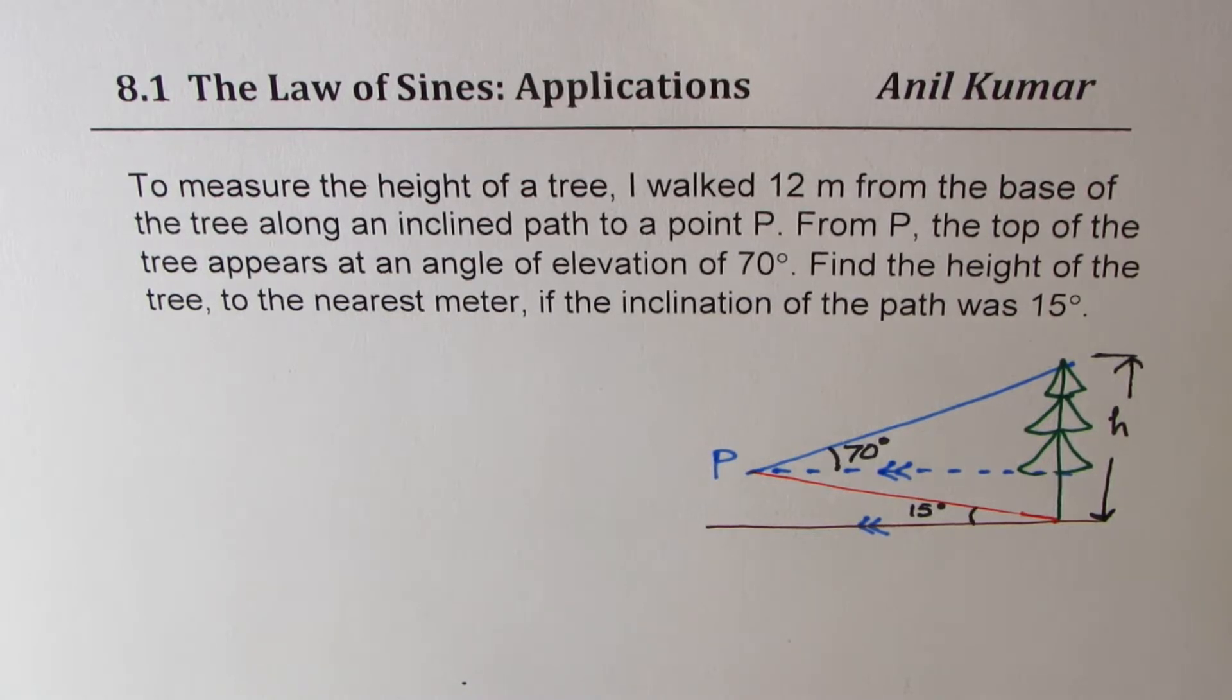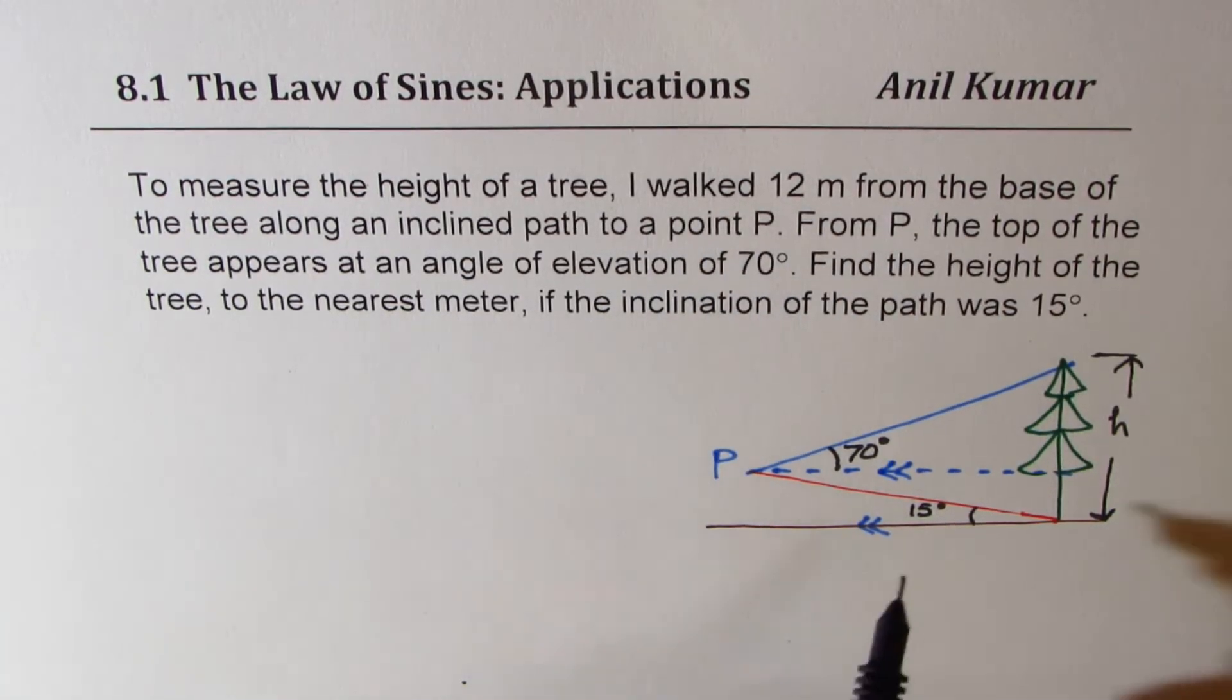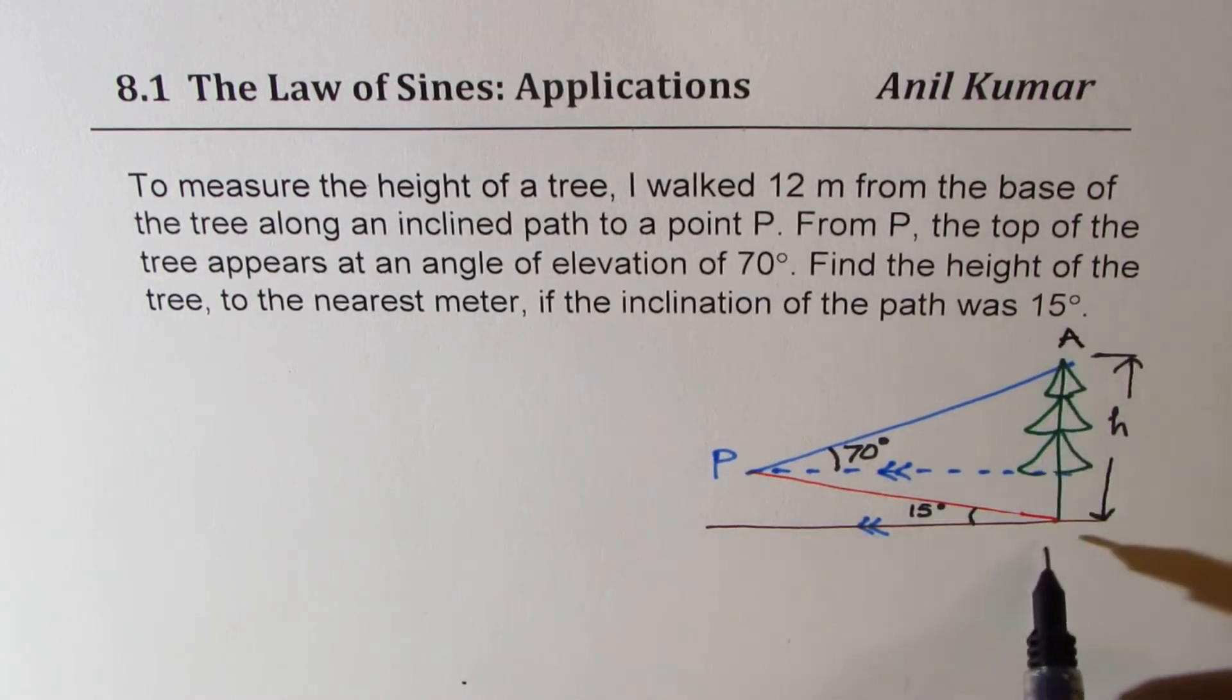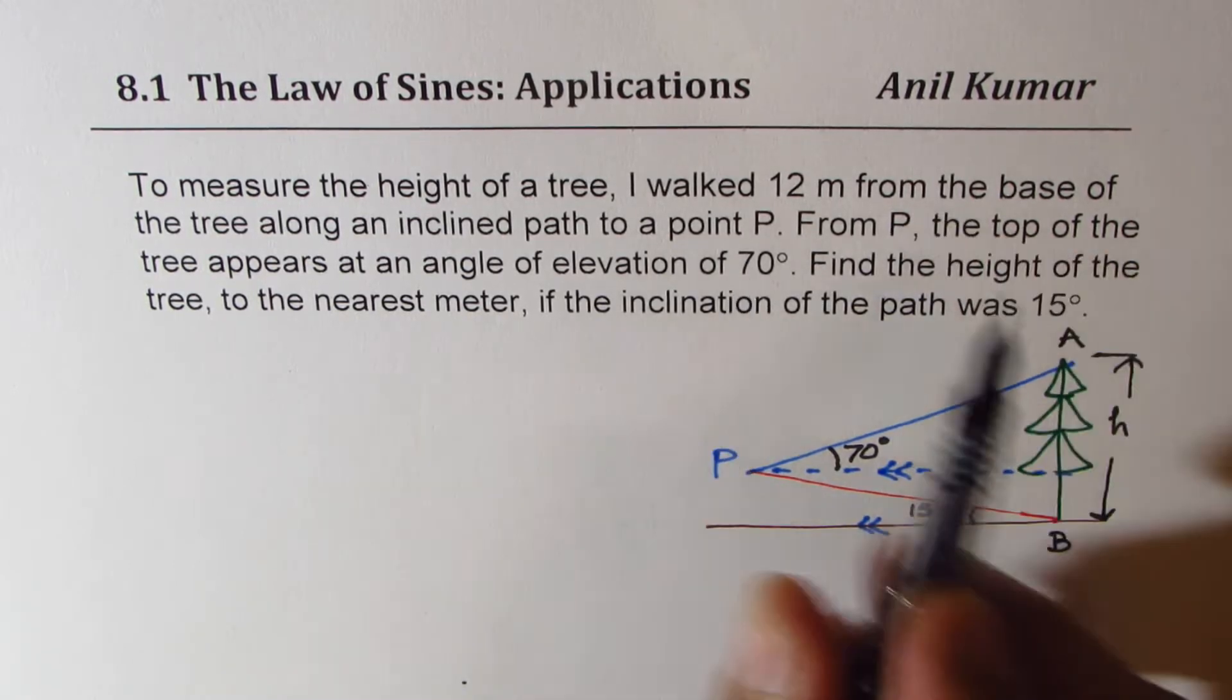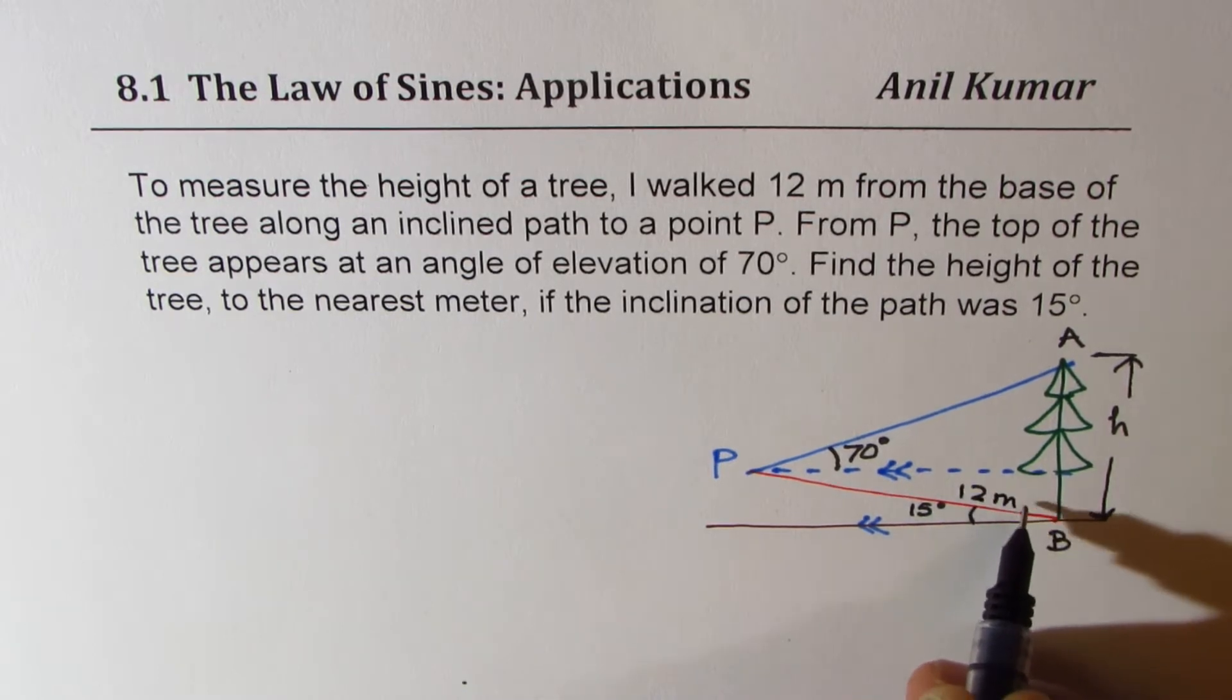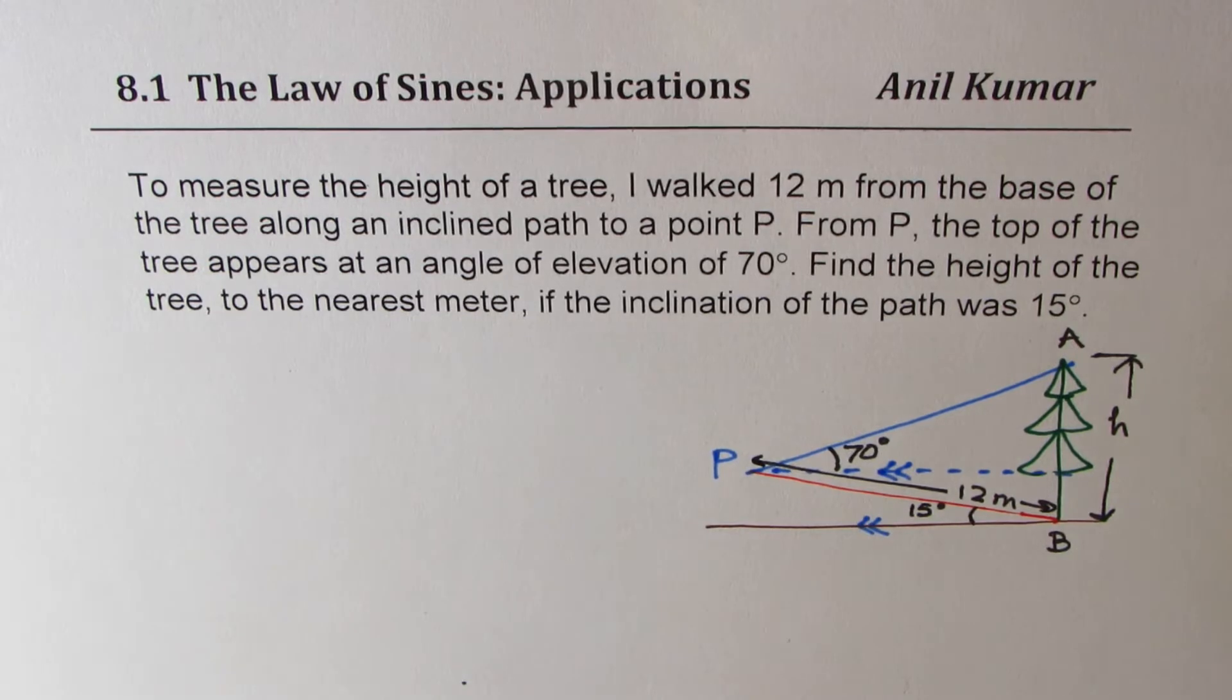So that's the question for you. Now, once the sketch is there, I hope it is simpler. You can pause the video, answer this question, and then look into my solution. We are also given that I walked 12 meters. That means this path, let's say this is the tree, let's say A and B point. So from B, it is 12 meters that I walked. So that means the whole length here is 12 meters.